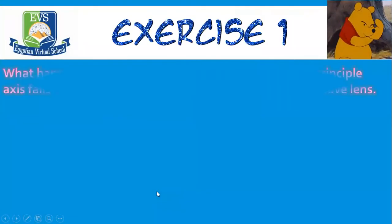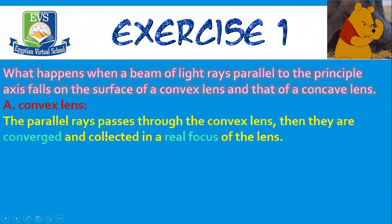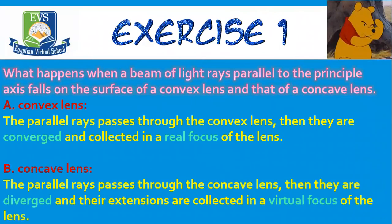Exercise one: what happens when a beam of light rays parallel to the principal axis falls on the surface of a convex lens and that of a concave lens? Number one, in the case of convex lens, the parallel rays passing through the convex lens are converged and collected in a real focus. In the case of concave lens, the parallel rays passing through the concave lens will diverge and their extensions are collected in a virtual focus.